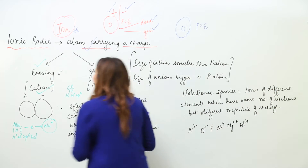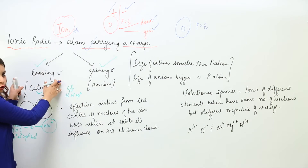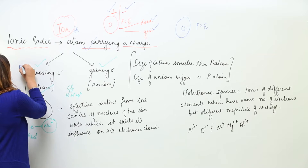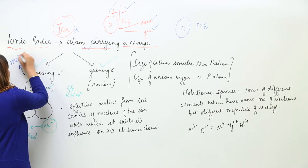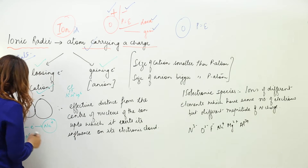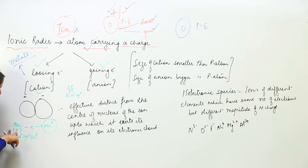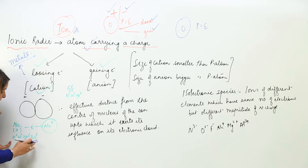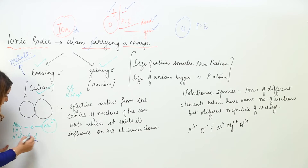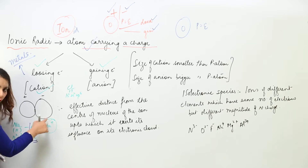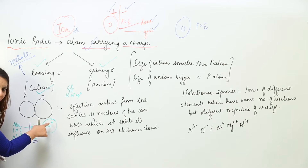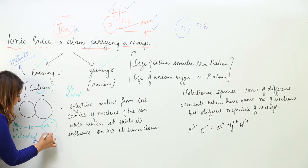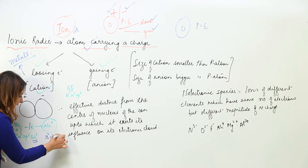For example, suppose we have any atom and it loses electrons. This is a feature of metals — they only lose electrons. Let us take the example of sodium: atomic number is 11 and configuration is 1s², 2s², 2p⁶, 3s¹. It will lose one electron in order to acquire a stable electronic configuration, forming a positively charged ion called a cation. Its electronic configuration becomes 1s², 2s², 2p⁶.